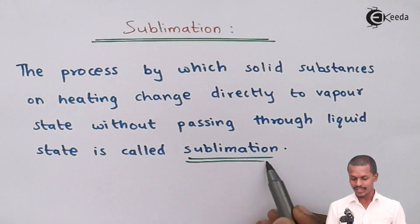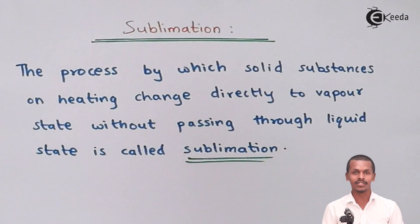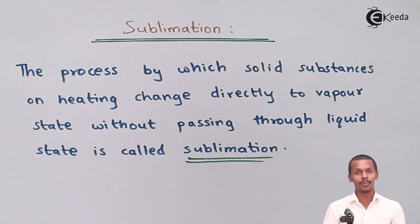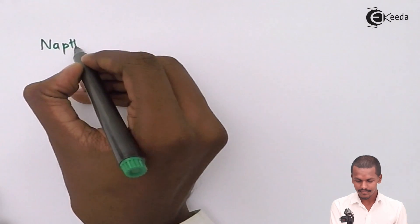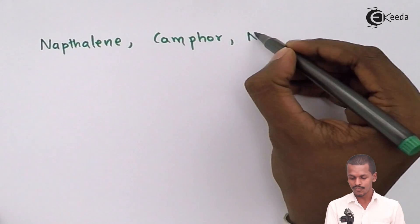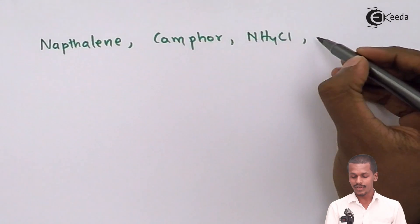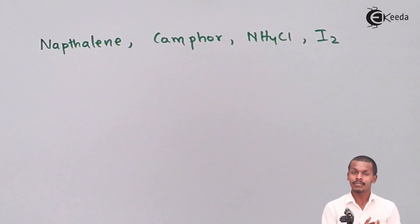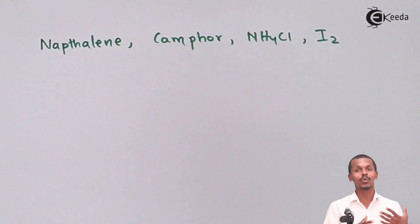So sublimation is the process in which a solid substance is converted into its vapor phase without forming a liquid phase. There are certain organic compounds that are solid but don't convert into liquid while heating — they directly convert into their vapor phase. These compounds include naphthalene, camphor, ammonium chloride (NH4Cl), and iodine.